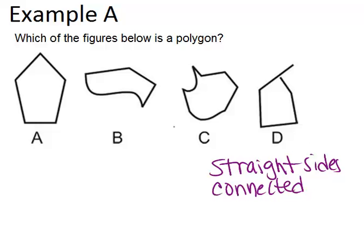If I look through the four possible answer choices, answer choice B has a curved side here, which makes it not a polygon. Looking at C, C also has two curved sides, which makes it not a polygon.